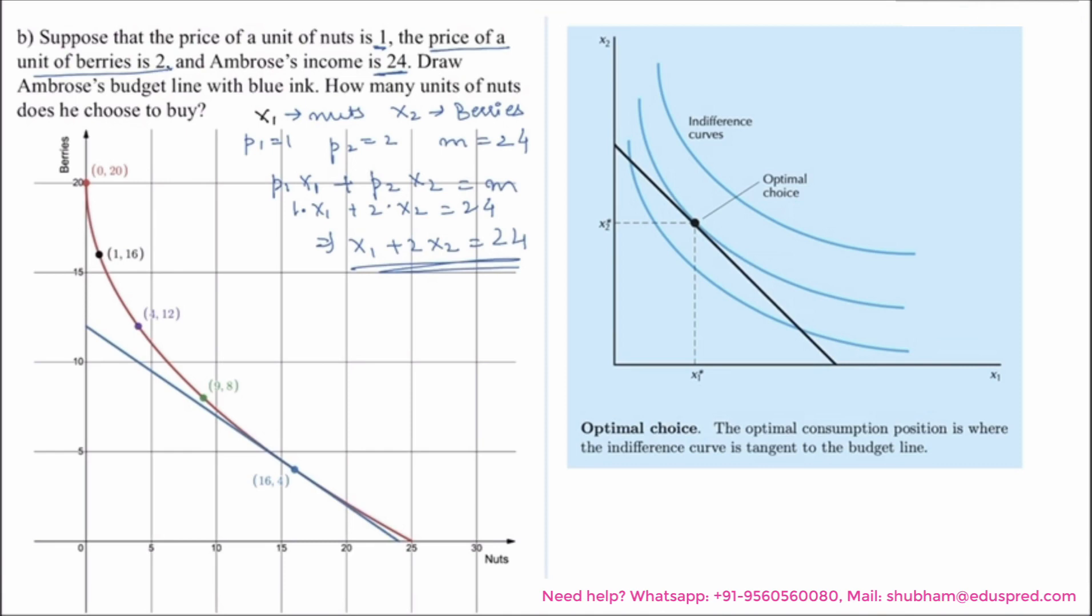Suppose this is your graph where on the X axis you have X1 and Y axis you have good X2, and these blue lines are your indifference curves and this black straight line is your budget line.